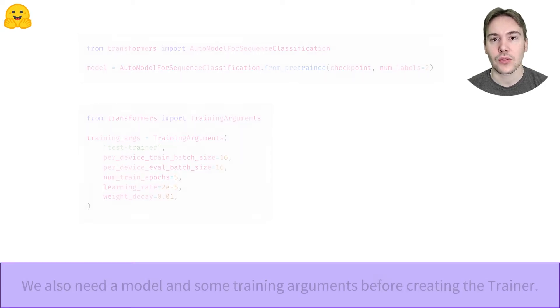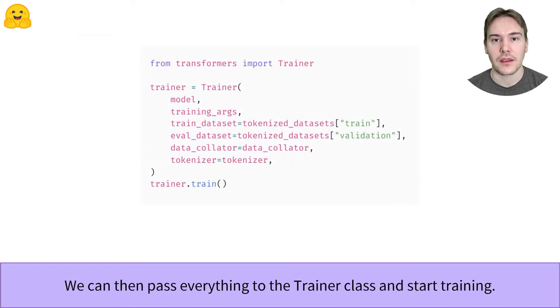It's been very easy to create a Trainer and launch a training. This should display a progress bar and after a few minutes, if you're running on a GPU, you should have the training finished. The result will be rather anticlimactic however, as you will only get a training loss, which doesn't really tell you anything about how well your model is performing. This is because we didn't specify any metric for the evaluation.